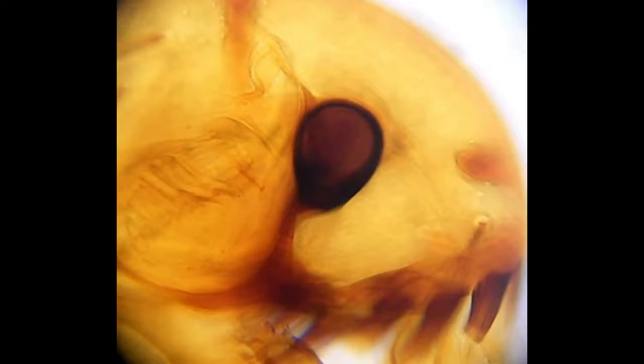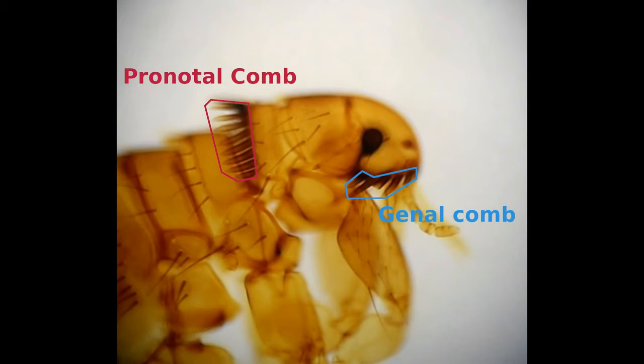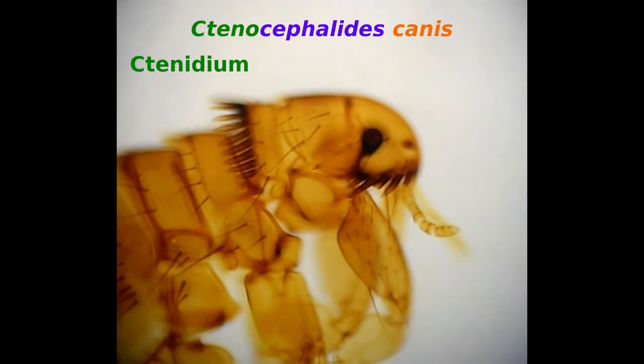Number three, the ctenidia. These are the pronotal and genal combs. Each of these spines is referred to as a ctenidium and give the dog flea its taxonomic name of Ctenocephalides canis. Cteno referring to the ctenidium, cephal referring to the head, and canis to its preferred host.